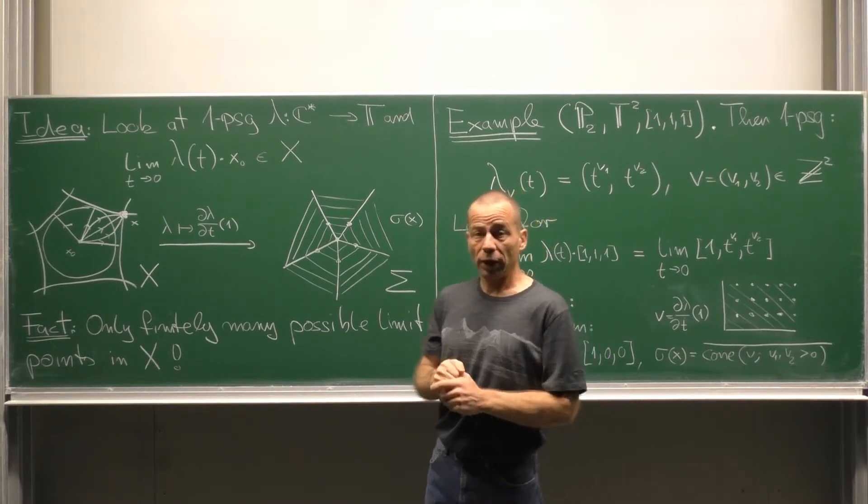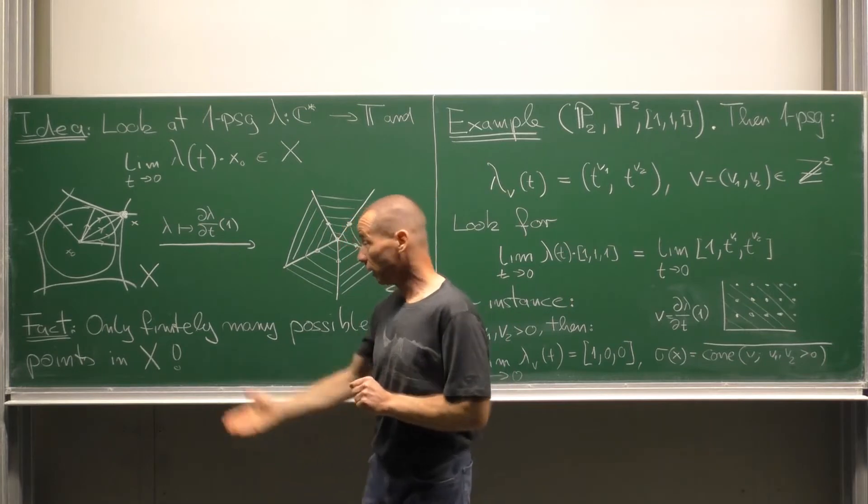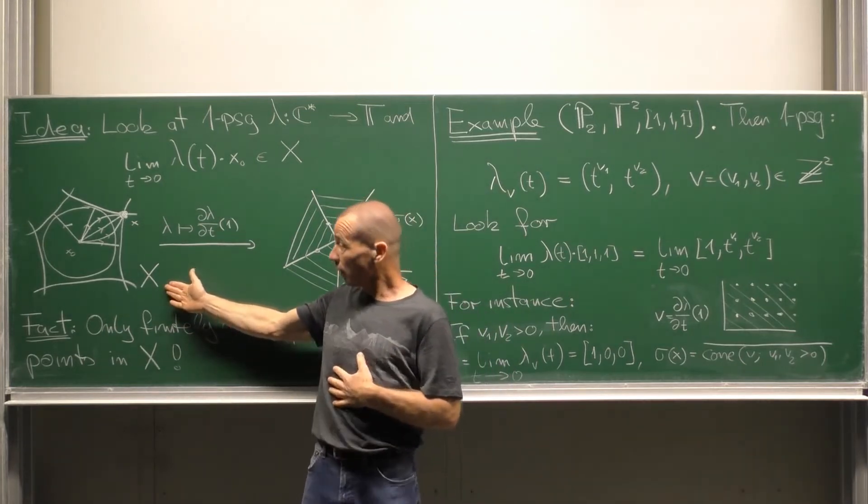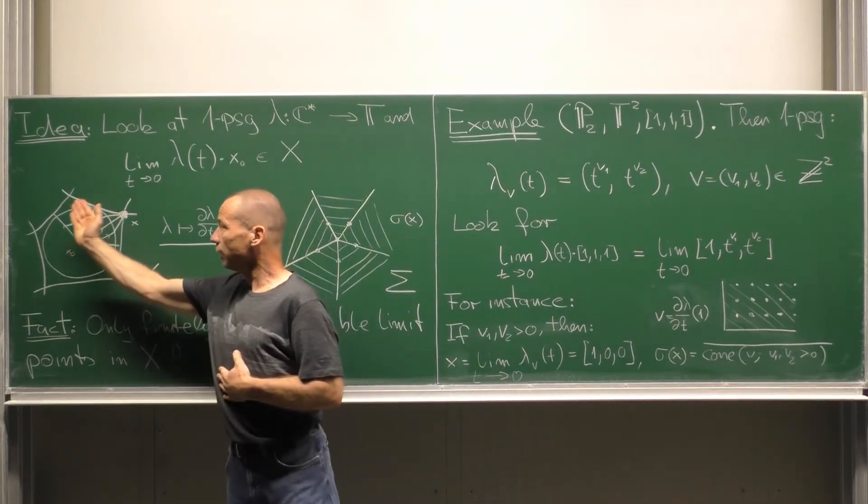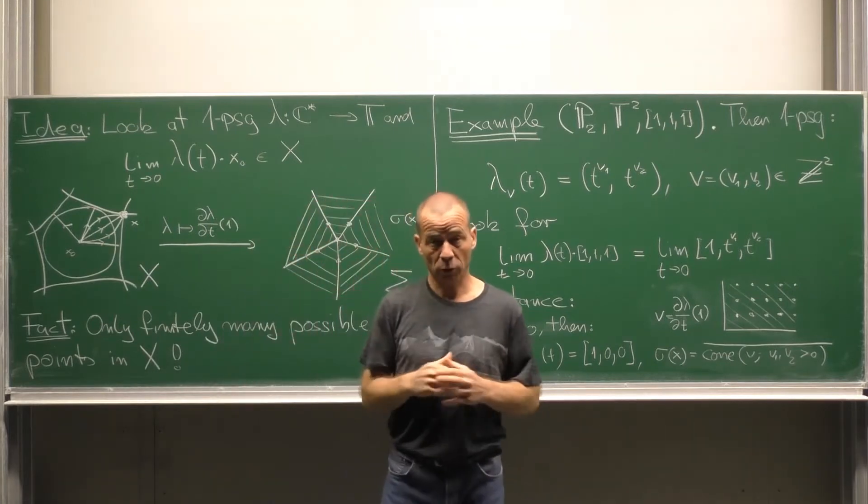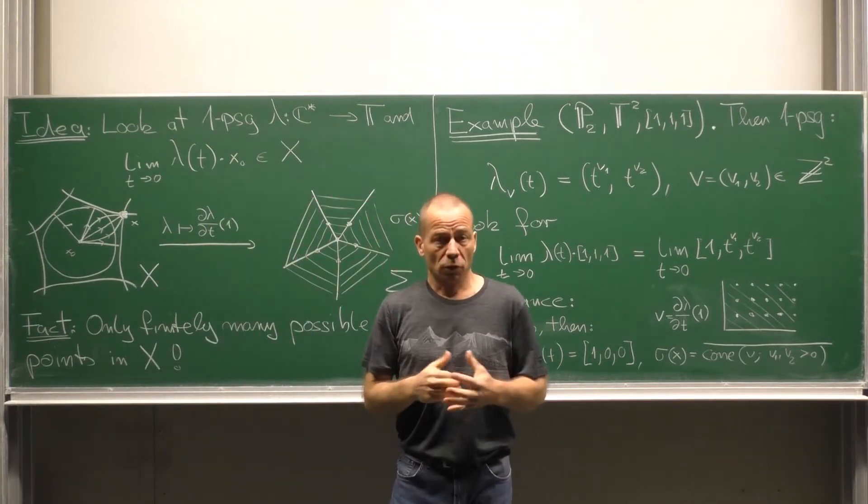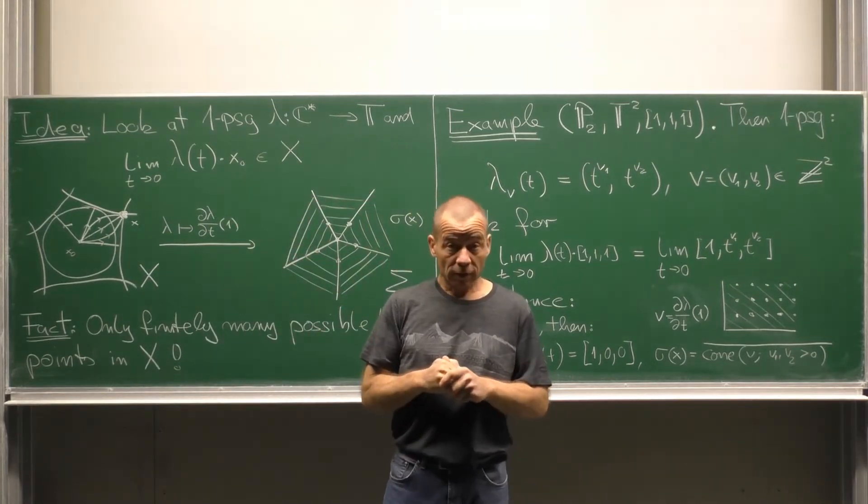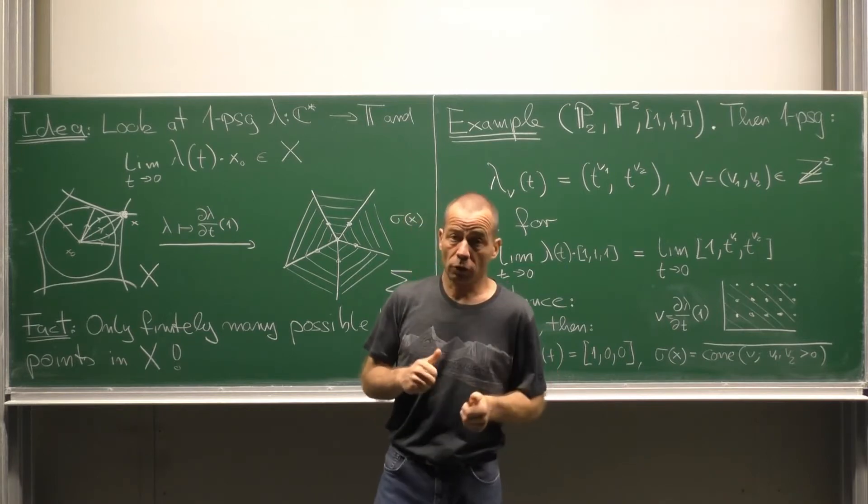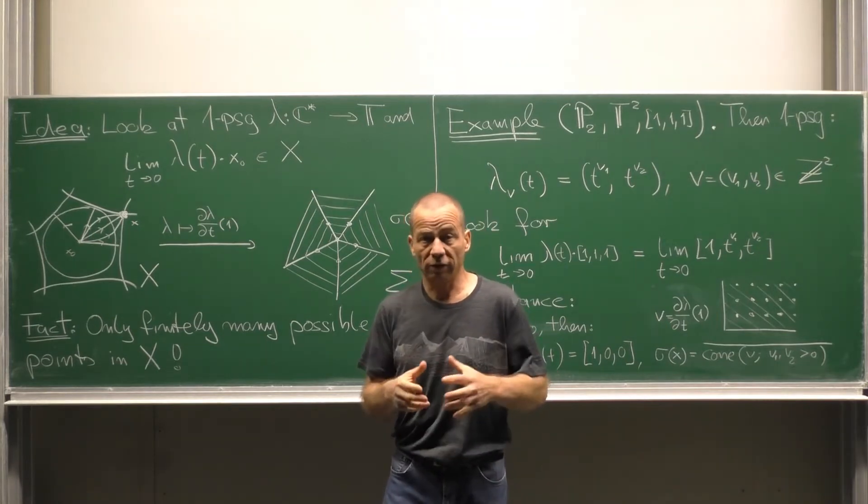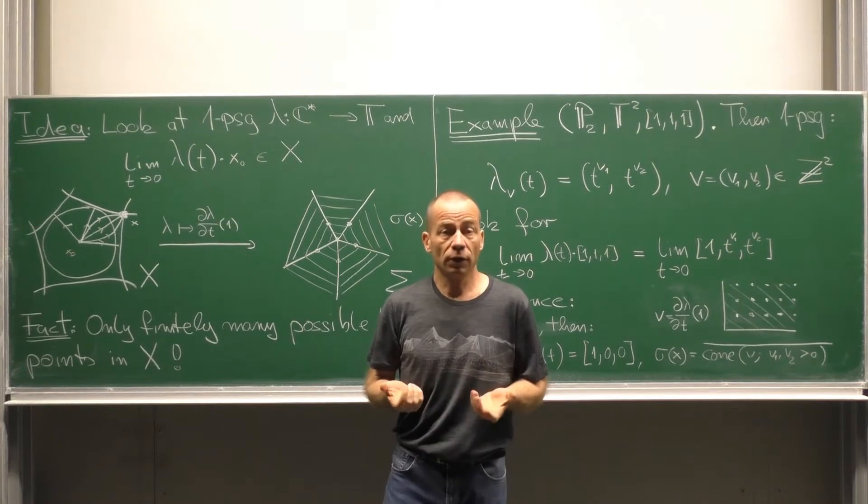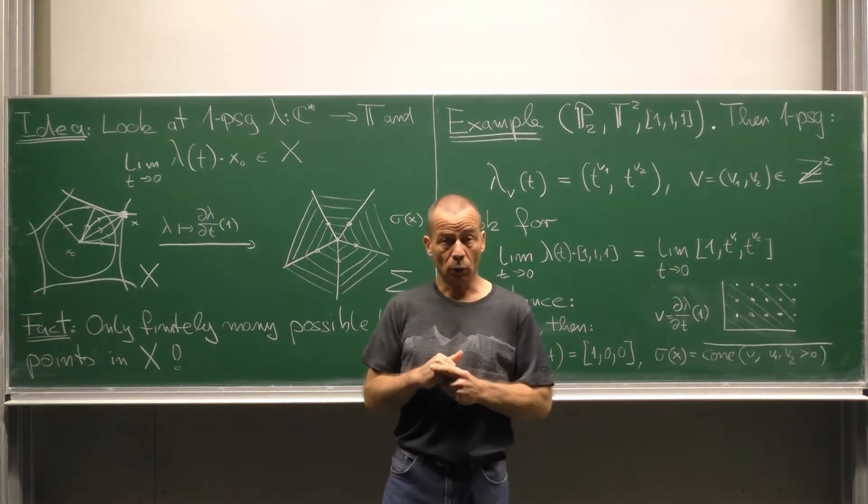Geometrically the situation looks as follows. Here is our toric variety X. We have the base point and the torus orbit through the base point. This is almost all of X. Besides the torus orbit through the base point we have the boundary which is a closed set of lower dimension.